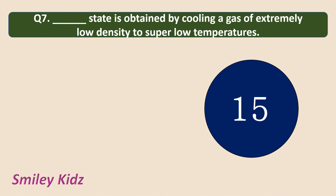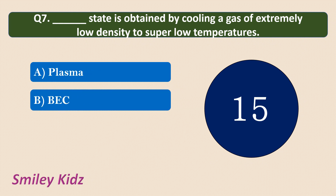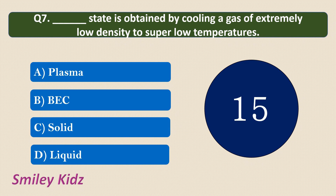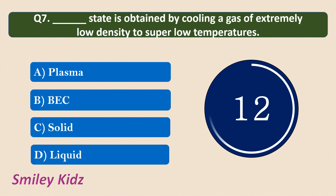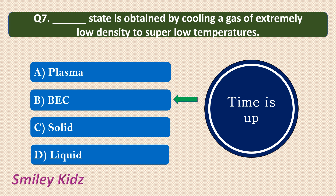Question number 7. Dash state is obtained by cooling a gas of extremely low density to super low temperatures. Options are: plasma, BEC — that is Bose-Einstein condensate state — solid, or liquid. The correct answer is BEC. Bose-Einstein condensate state is obtained by cooling a gas of extremely low density to super low temperatures.